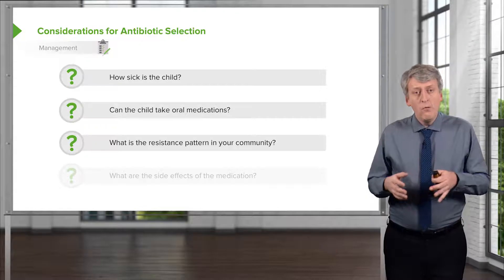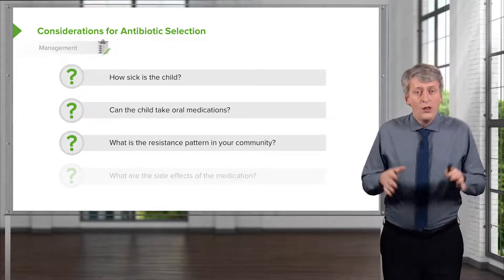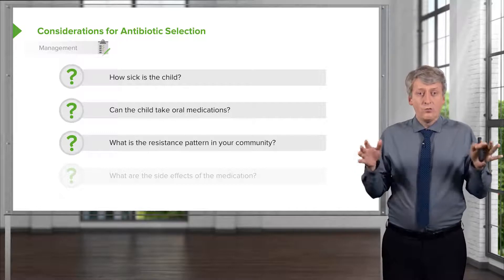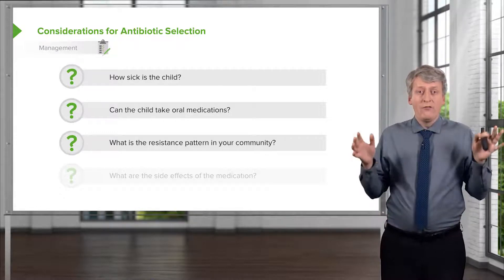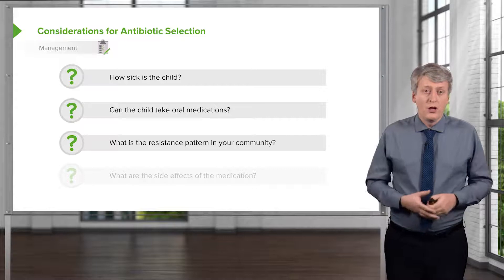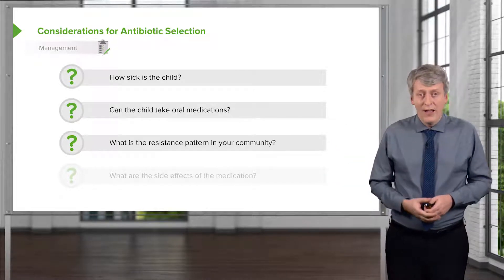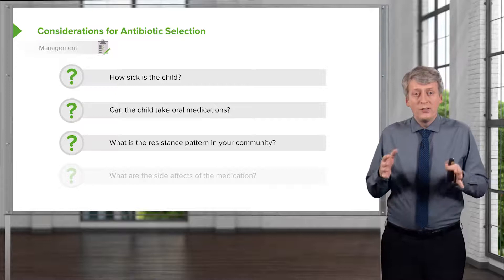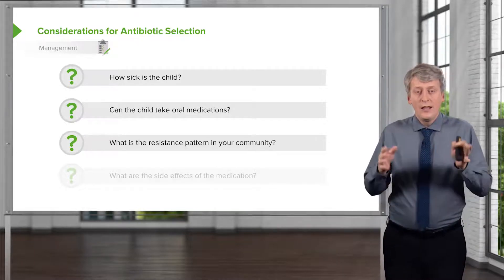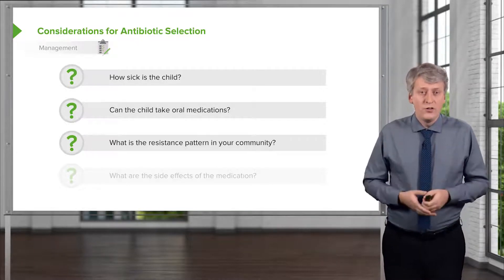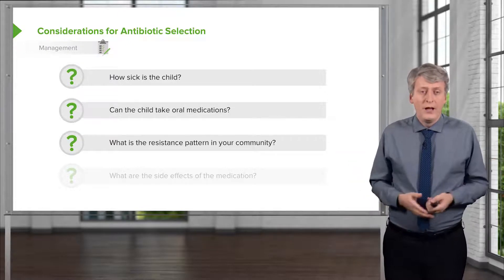You may want to know what the resistance pattern is in your community. Right now in the United States, we do not have very resistant Streptococcus pneumoniae. This is because of the way we've been vaccinating. So amoxicillin is working great in most places in the country — that's generally our first-line agent. But if you have a lot of resistance, you might plan accordingly differently.